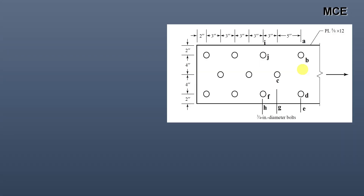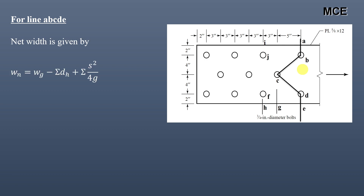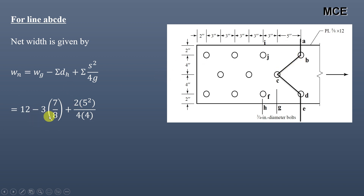The next failure line we consider is along A-B-C-D-E. Since this is a staggered failure line, the net width is given by the staggered formula. This line passes through three bolt holes — one at B, one at C, and one at D — and there are two staggered pitches, with S = 5 inch and G = 4 inch. Putting in these values gives a net width of 12.5 inch.